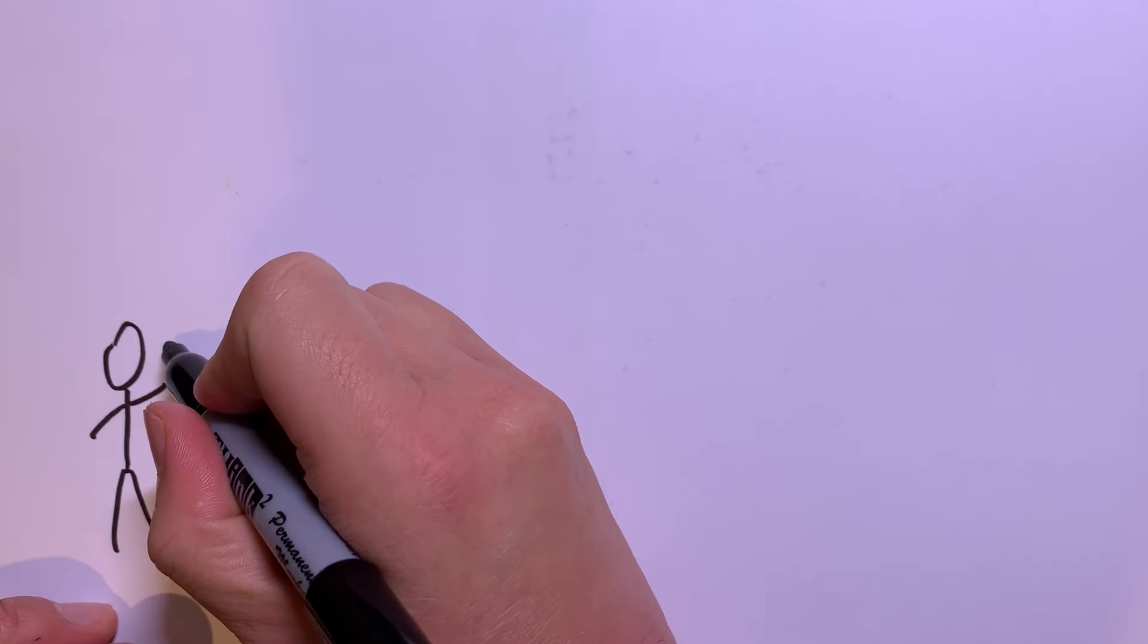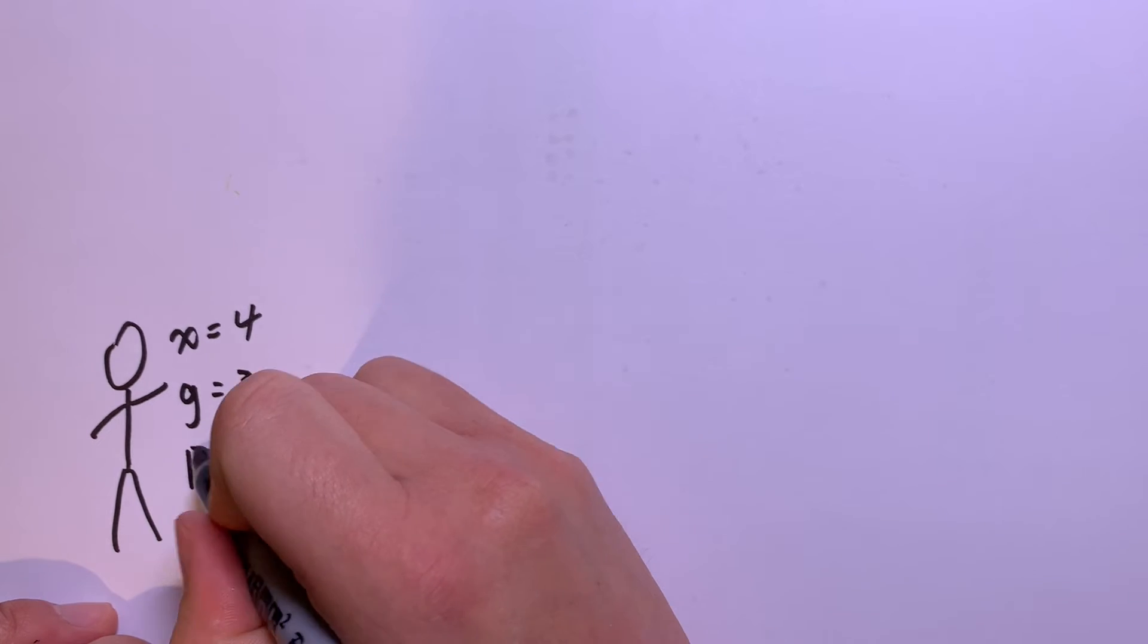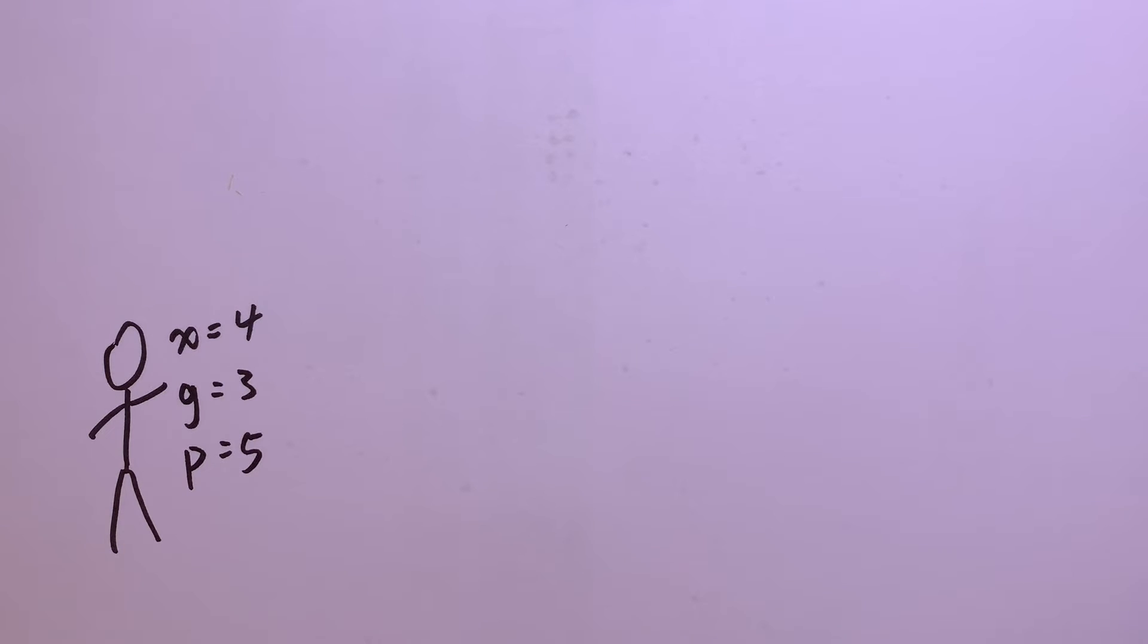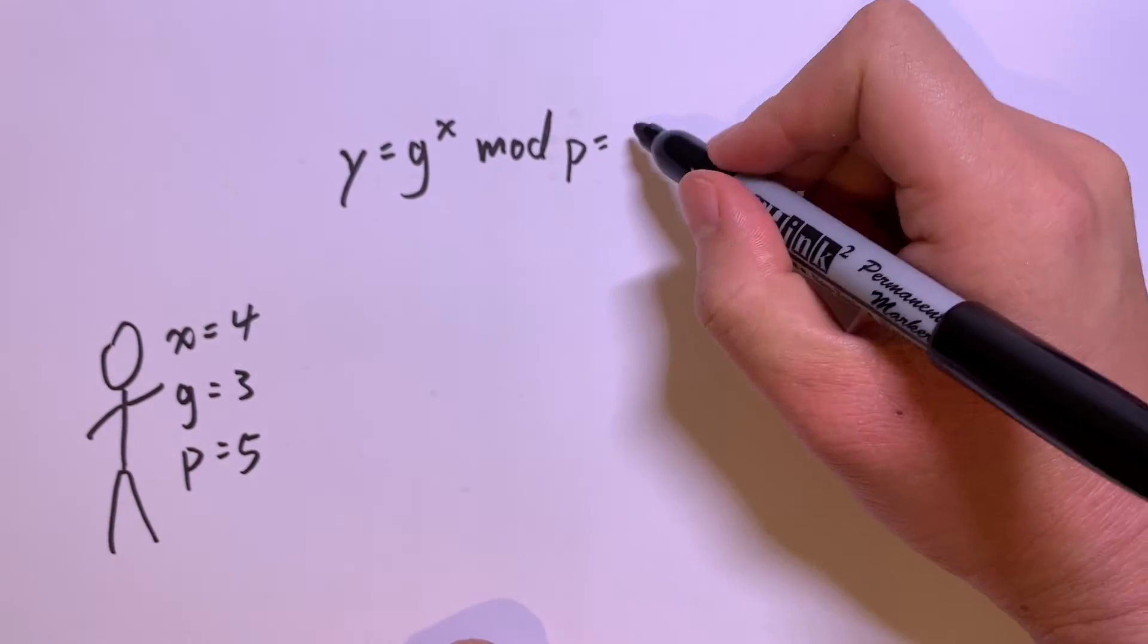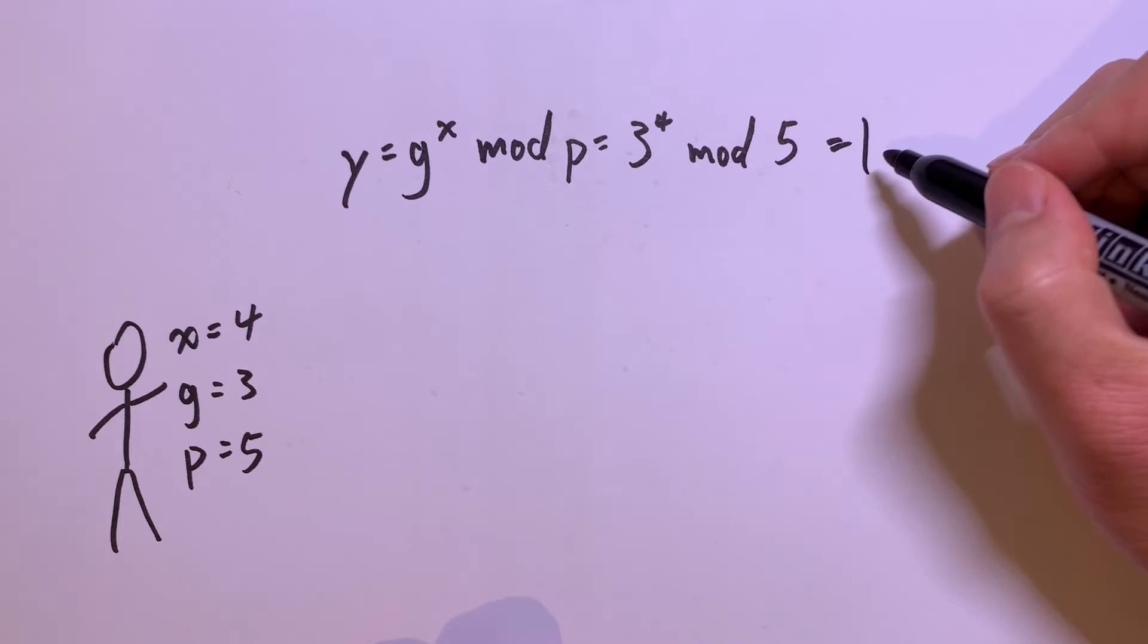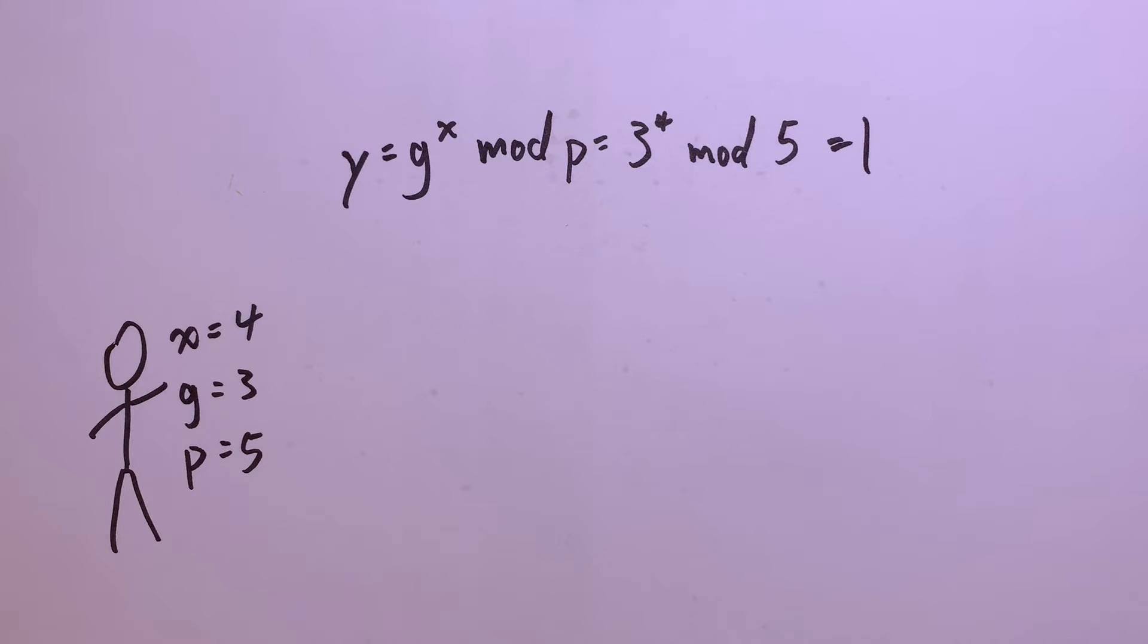But if you're the person who chose x equals 4, g equals 3, and p equals 5 in the first place, you can calculate y to be g to the x mod p, which is 3 to the 4th mod 5, which is 1. So then, of course you know x, because you're the one who chose it. But no one else will know x unless they get really, really, really lucky.